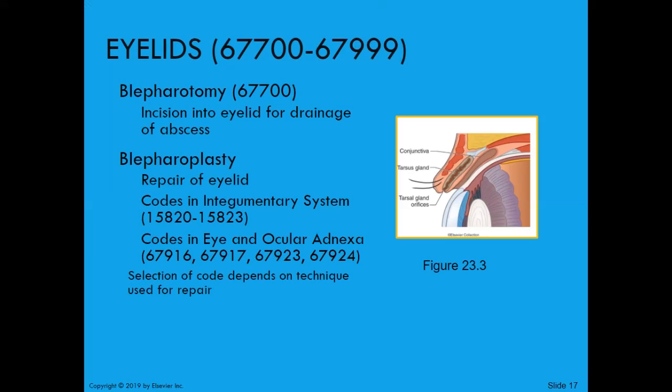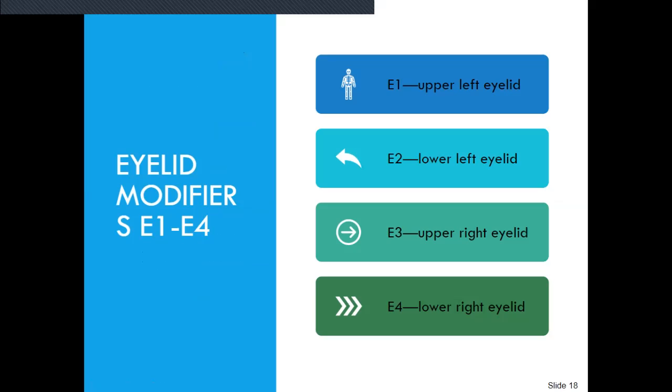Now we're talking about the eyelids, again at the bottom of page 578. I want to point out your modifiers: E1 is upper left eyelid, E2 is lower left eyelid, E3 is upper right eyelid, and E4 is lower right eyelid. Blepharotomy is an incision into the eyelid for drainage of an abscess. Blepharoplasty is the repair of the eyelid. Codes in the integumentary system are 15820 through 15823. Codes in the eye and ocular adnexa are listed as well. Selection of the code depends on the technique used for the repair.